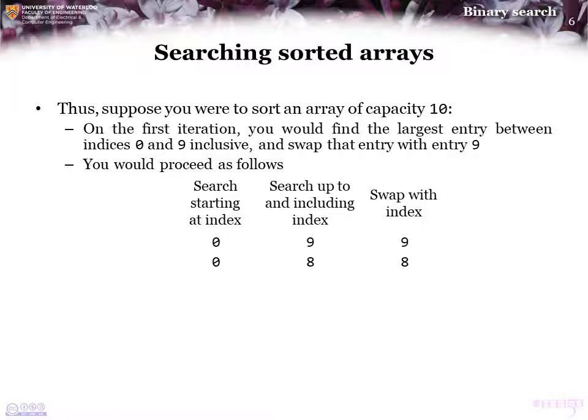Next, we will find the largest entry between indices 0 and 8, and swap that entry with the entry at index 8. We keep on going until we have searched for the largest entry between indices 0 and 1 — that is, two entries. Once we have found that largest entry, we swap it with the second index in the array. After this, there is only one entry left, and that value must be the smallest entry, so we are done.